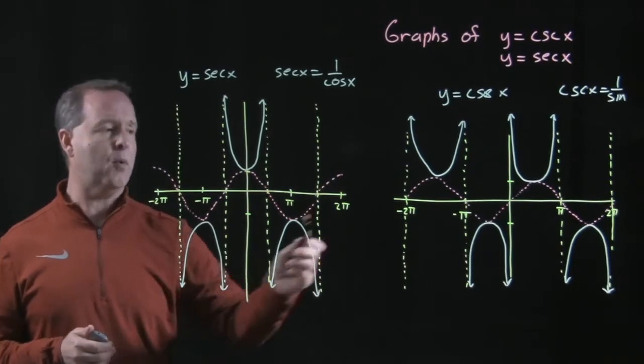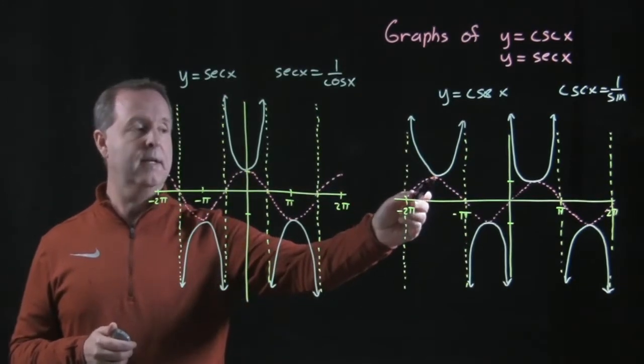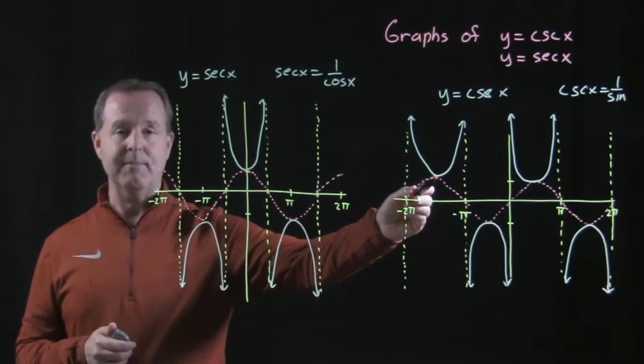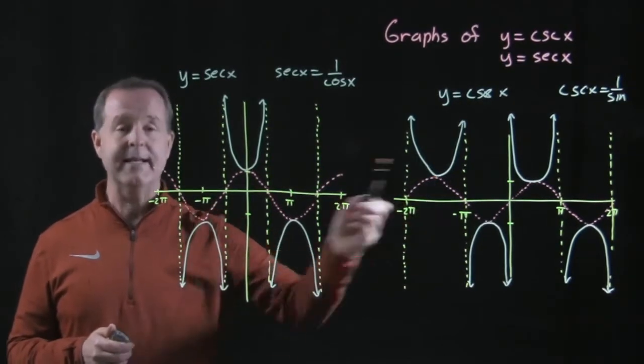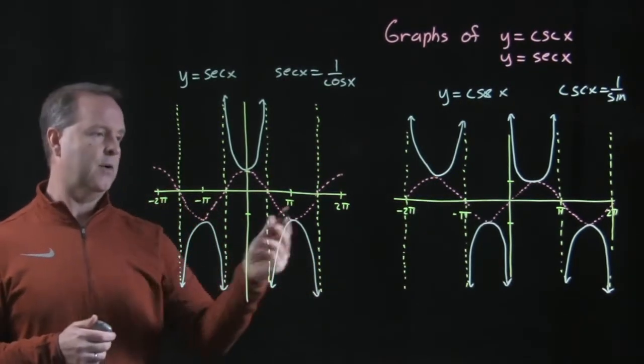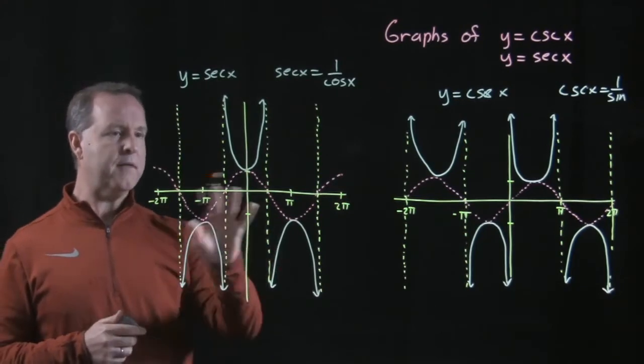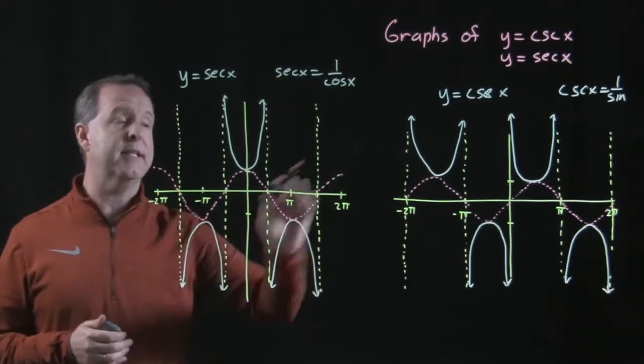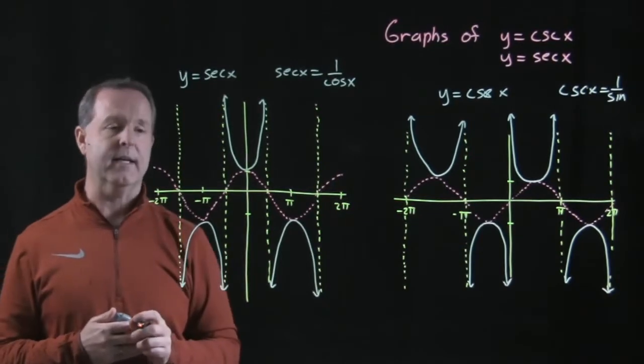And then the lowest points, or the values of my cosecant values, do not get between negative one and one. So on this one, on both of these, I would say that's a little bit about the cosecant graph.